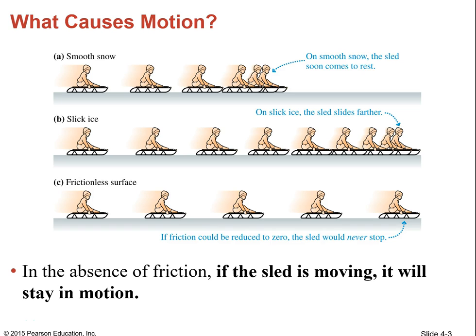When we look at what causes motion, we have to look at where it's going. If we have a person on a sled and it's nice and smooth, if there's friction it's going to slow down. If there's no friction, it'll move at a constant rate. This change in motion comes from a force acting on it.